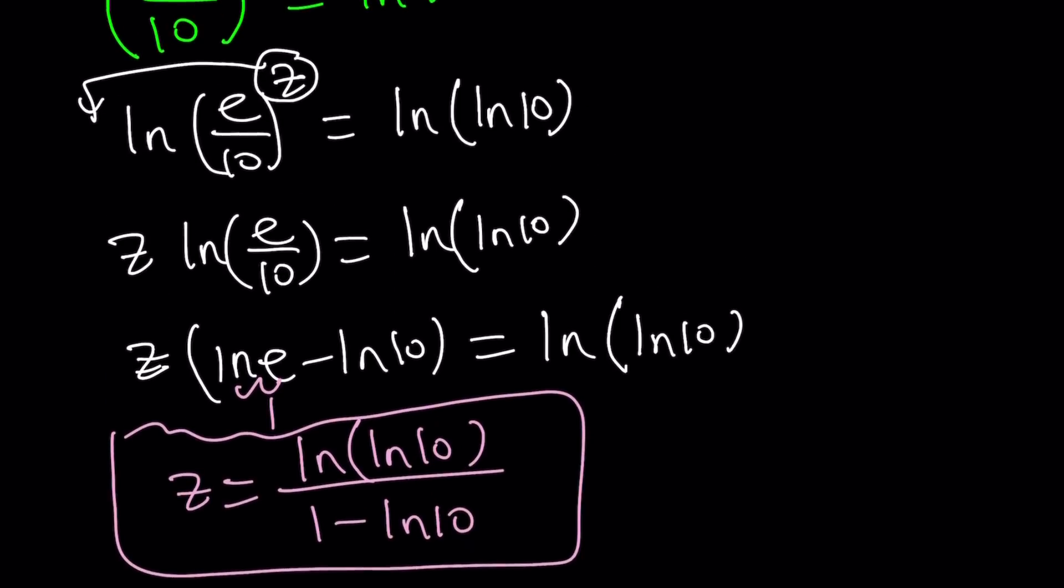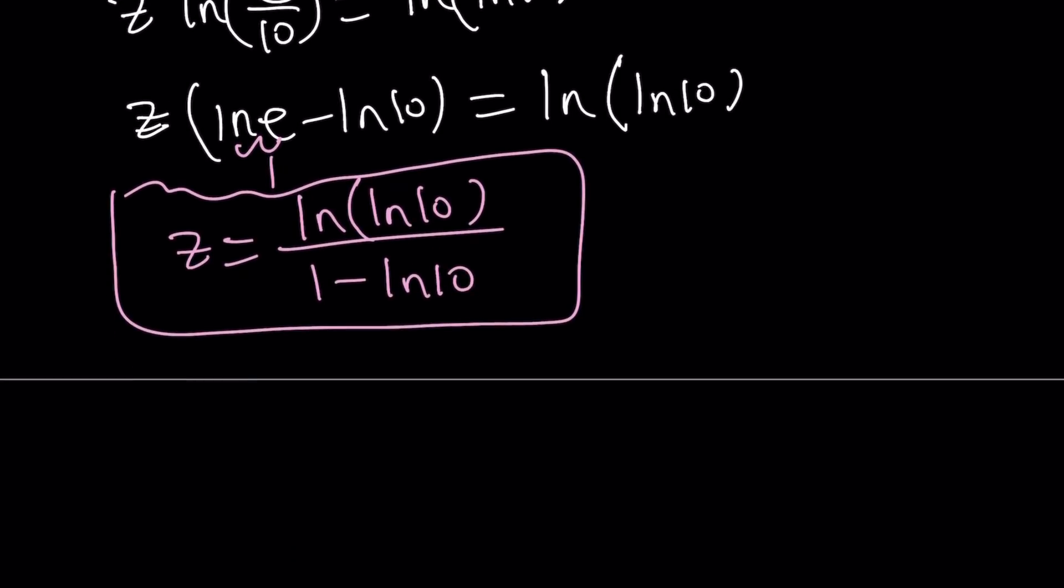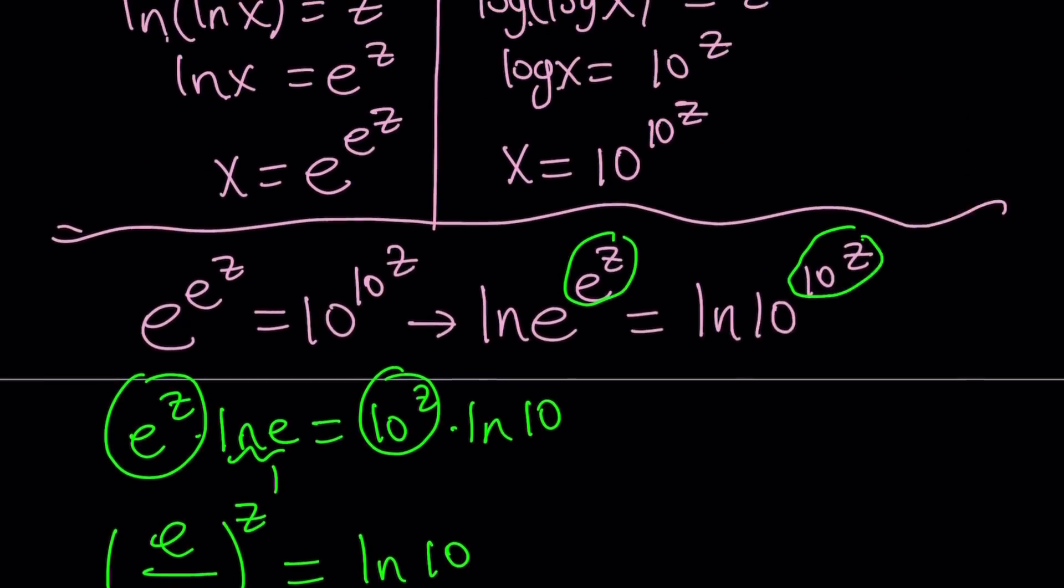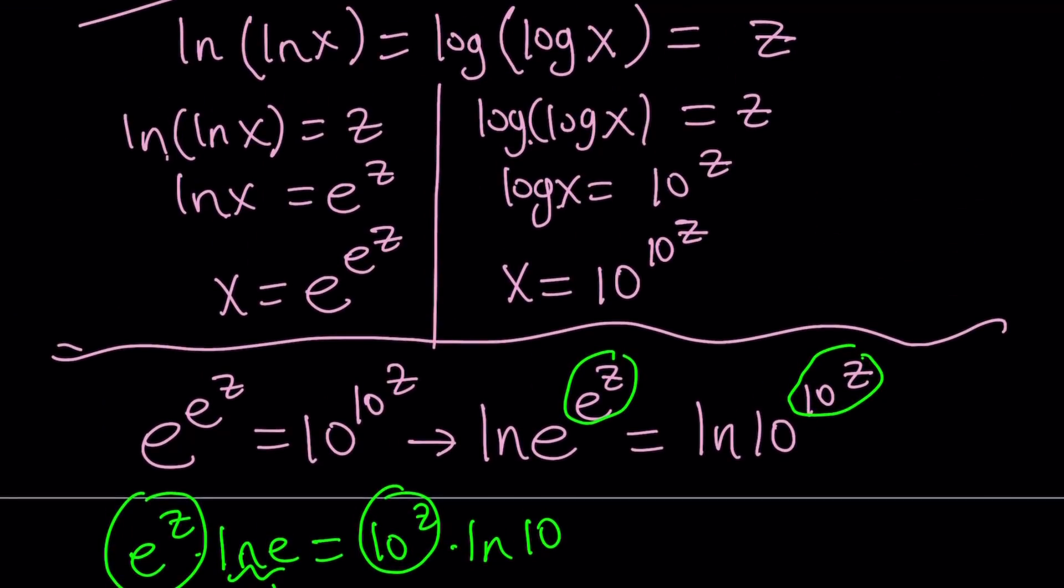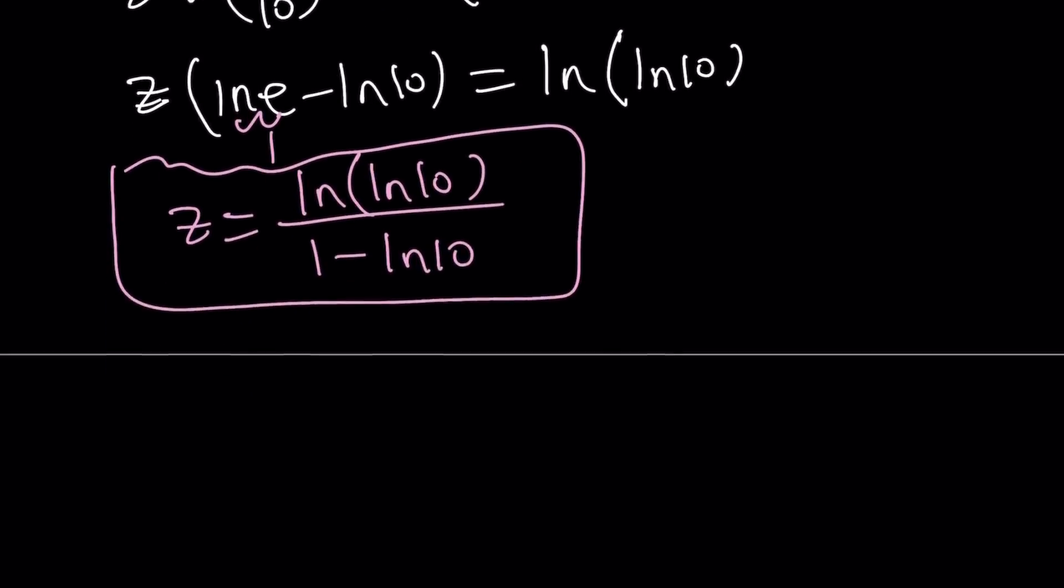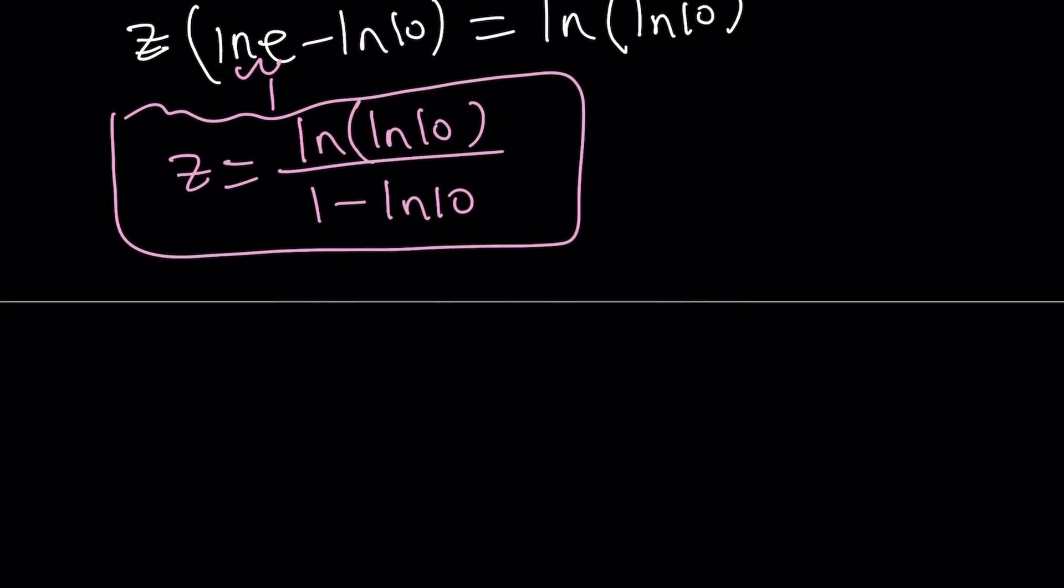But am I looking for z? I don't think so, right? We are looking for x. But what is the relationship between x and z? Here we go. x is equal to e to the power e to the power z or 10 to the power 10 to the power z. You can use either one. It doesn't matter. The answer is going to be the same. It's supposed to be. But I'm going to use e because e is awesome. That's Euler's number. So x is equal to e to the power e to the power z.